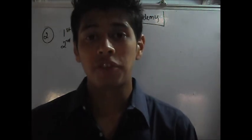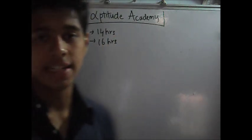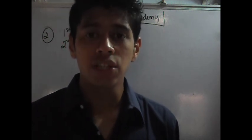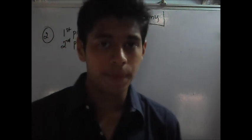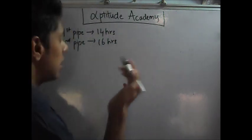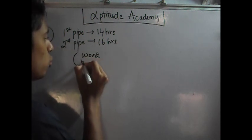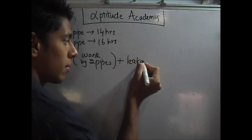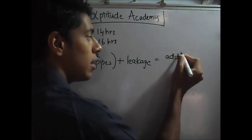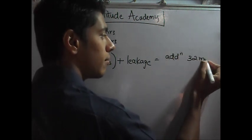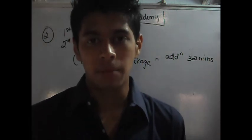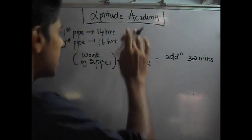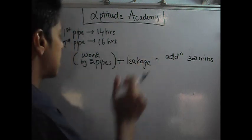Now, in your second problem, you have two inlet pipes. You have one that fills in 14 hours, one that fills in 16 hours. They have said that it opens simultaneously. Both fill. But they have also said that due to a leakage, it actually takes 32 minutes more to fill. Now, a simple way to approach these kind of problems is just forget about the leakage first. Just assume that you have two pipes. Let's start from there. You just have two pipes. One that fills in 14 hours and one that fills in 16 hours.